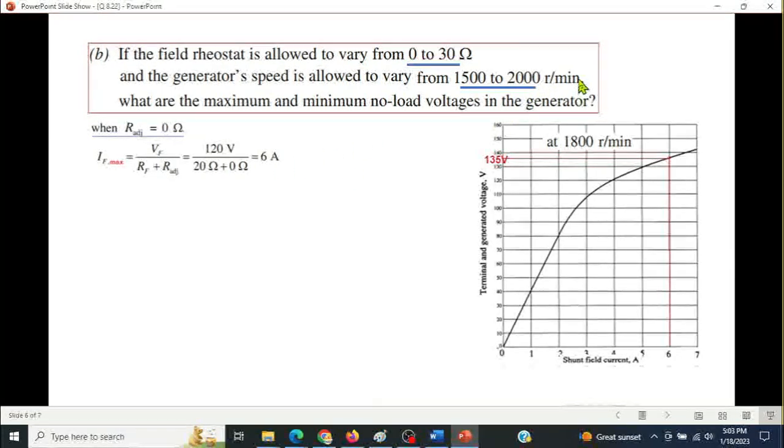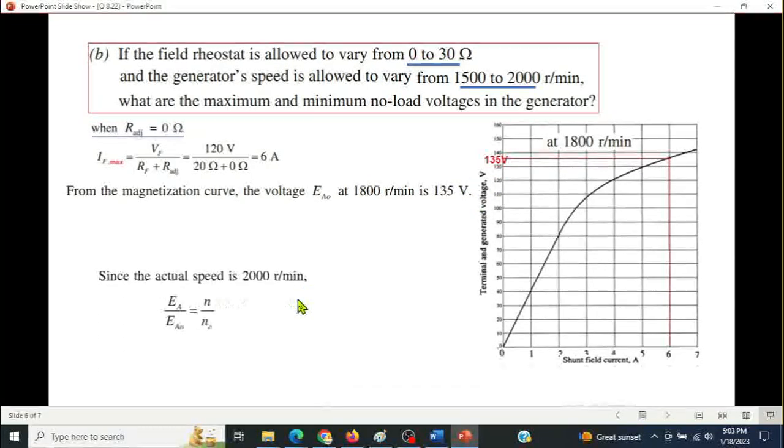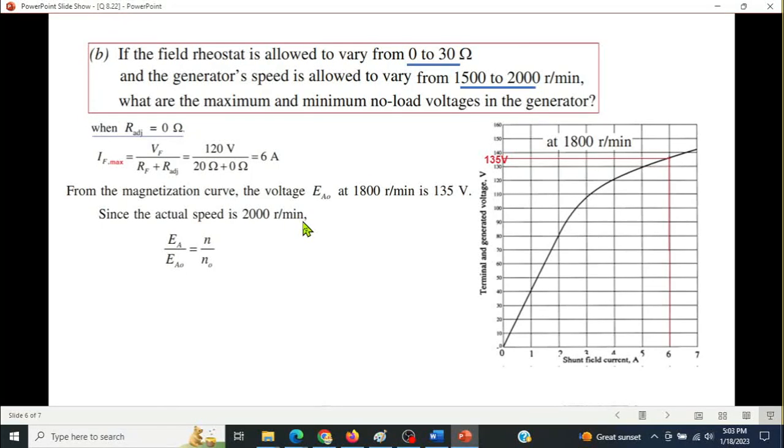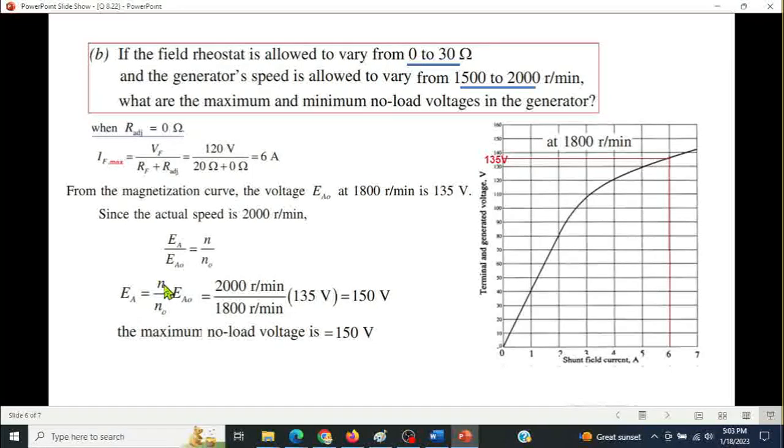Now maximum RPM. So maximum voltage is induced. For magnetizing curve, EA zero at eighteen hundred RPM is one thirty five. The actual speed is two thousand RPM, so EA over EA zero is N divided by N zero. I use the formula. EA equals N divided by N zero times EA zero. Two thousand over eighteen hundred times 135 from the graph, so EA is 150. So the maximum no load voltage is also 150 volt.